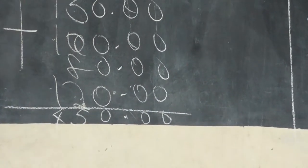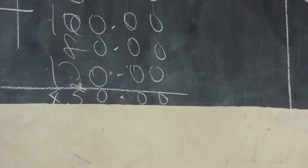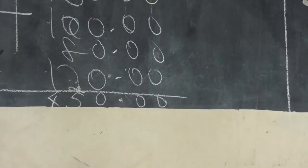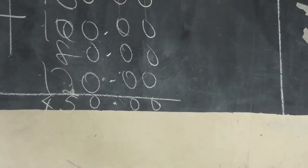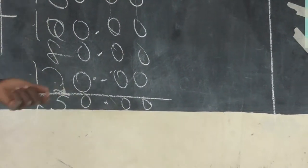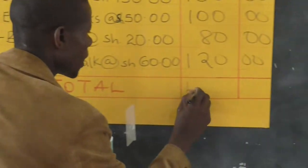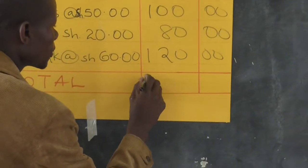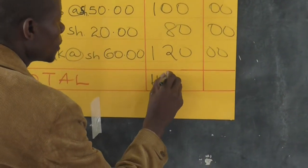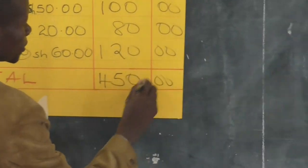So for all the items I have bought I am going to pay 450 shillings. The total cost for all the items I have bought is 450 shillings.